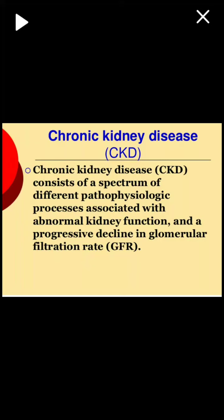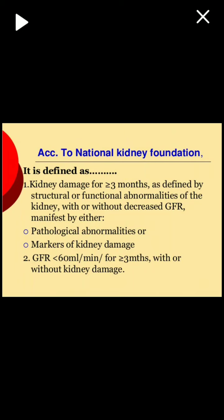Good morning, dear students. Today's class is on end-stage renal disease, also called chronic kidney disease. Chronic kidney disease is a spectrum of different pathophysiological processes associated with abnormal kidney function and a progressive decline in glomerular filtration rate. It is defined according to the National Kidney Foundation as kidney damage of more than or equal to 3 months, defined by structural or functional abnormalities of the kidney with or without decreased GFR, manifested by pathological abnormality or markers of kidney damage. The second criterion is a GFR of less than 60 ml per minute for more than 3 months, with or without kidney damage.